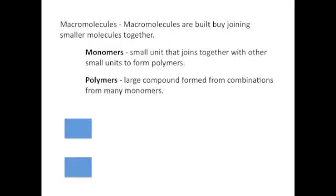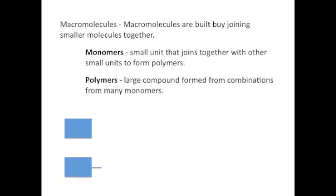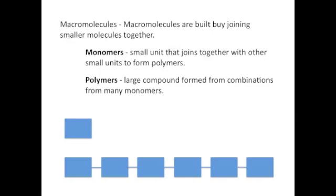A polymer is a large compound formed by combining many monomers together. As you can see in our little diagram at the bottom, a monomer would be one subunit, whereas a polymer will be many.